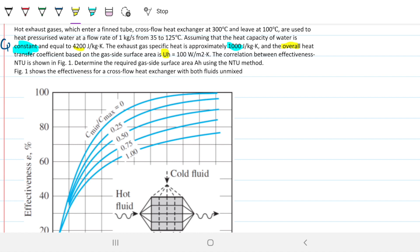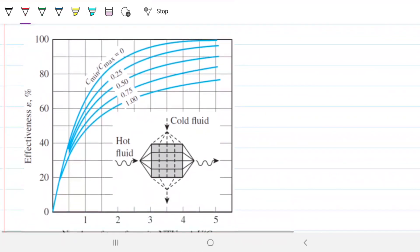The correlation between effectiveness and NTU is shown in figure 1. We are to determine the required gas surface area using the NTU method, so this whole problem is around finding what is the surface area for this heat exchanger.